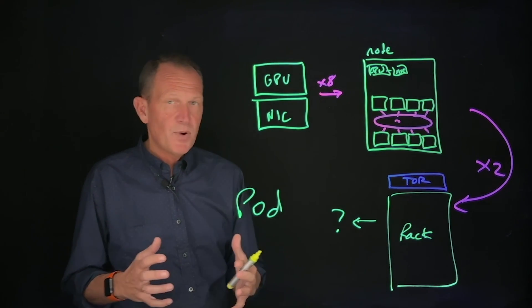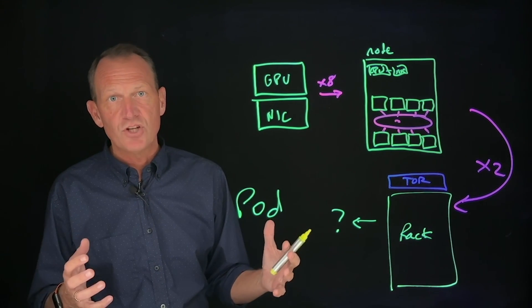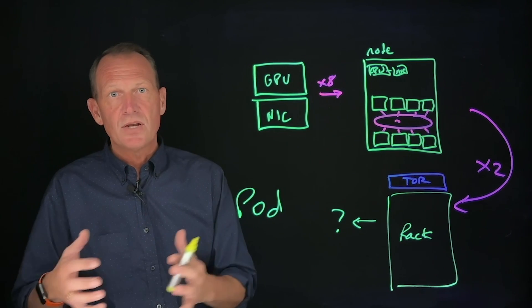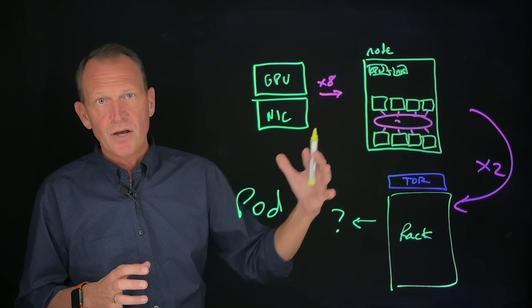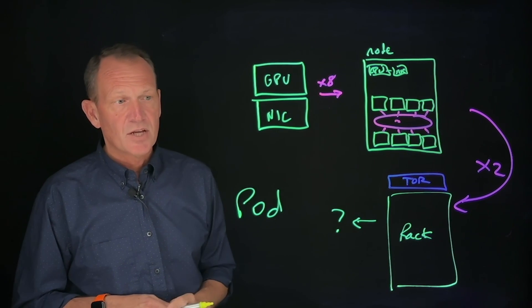You might see a pod be something from maybe 256 GPUs all the way to over 8,000 GPUs. But it's just a way to segment the network and provide some amount of design freedom when you get to interconnecting the pods together.